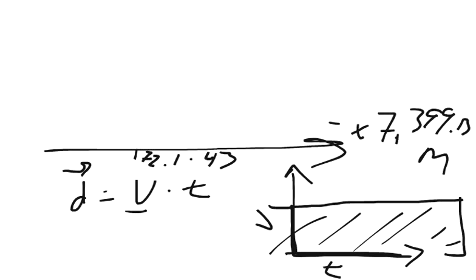That gives us a total distance over our x displacement is 7,399.13 meters. And our y displacement is going to be a little bit more tricky. So you remember our y initial velocity was 245.75 meters per second.